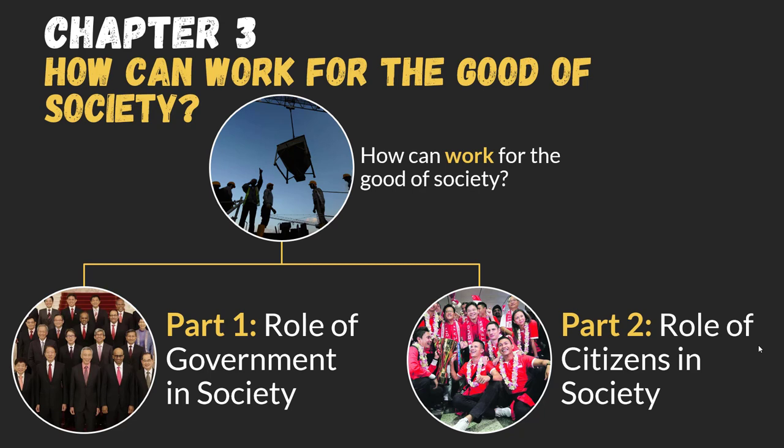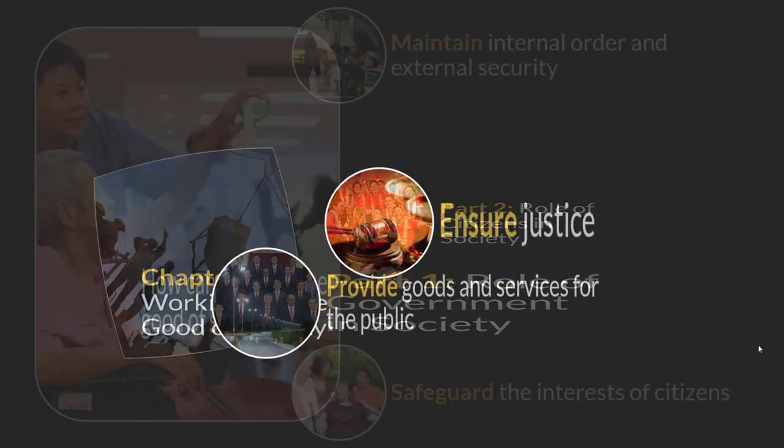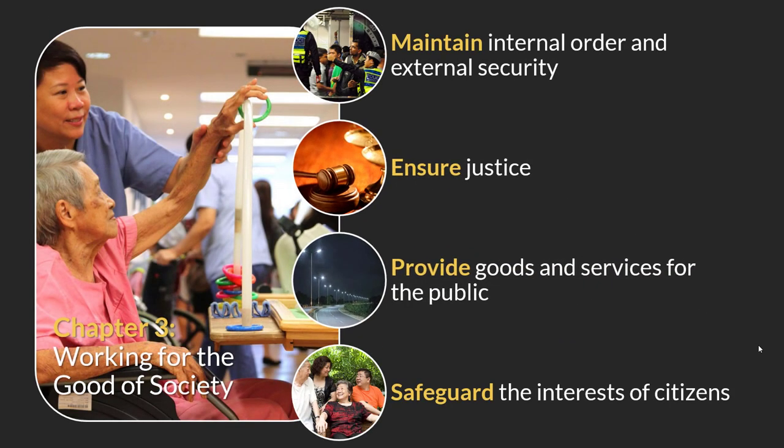For the roles of government, there are four to look at: one is to maintain internal order and external security; next, to ensure justice; third, to provide goods and services for the public; and last but not least, to safeguard the interests of citizens. We'll begin by taking notes on maintaining internal order and external security.